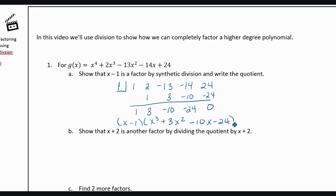Now part b says, show that x plus 2 is another factor by dividing the quotient, so what we just got, by x plus 2. Because we know that x plus 2 won't go into x minus 1, so it's going to go into the x cubed part.